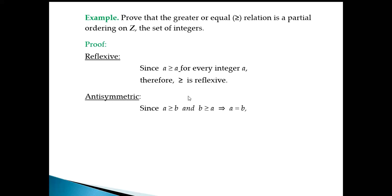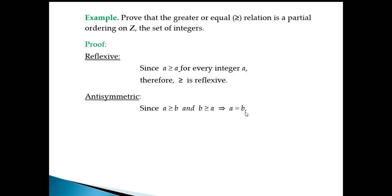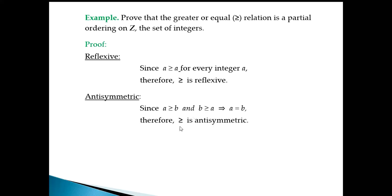For anti-symmetric: if a ≥ b and b ≥ a, when is this possible? It is only possible when a equals b. So if a equals b, then a ≥ b and b ≥ a both hold. Therefore the ≥ relation is anti-symmetric.